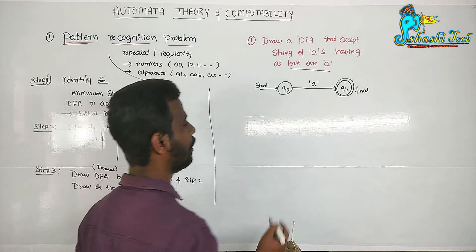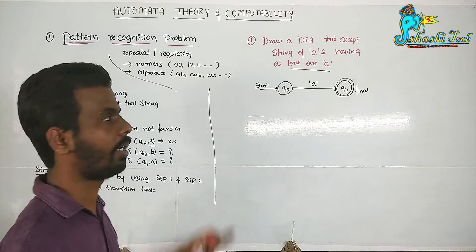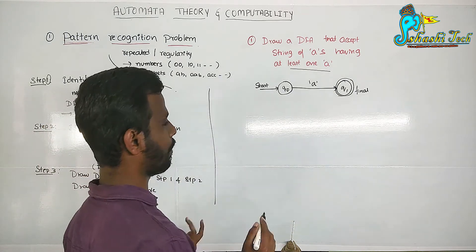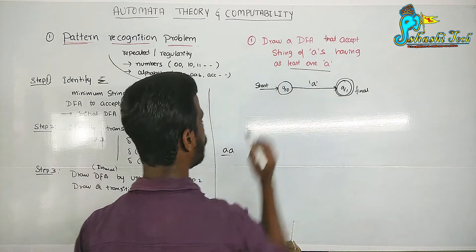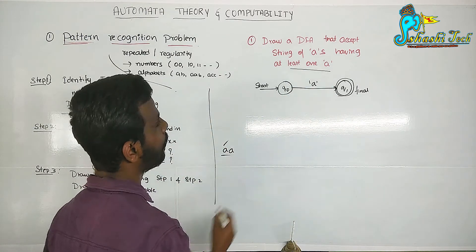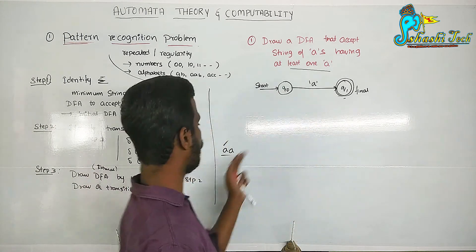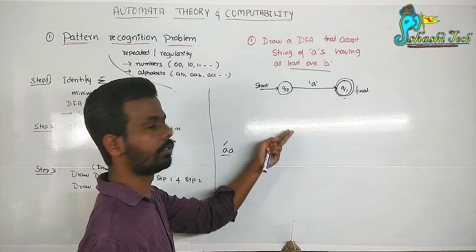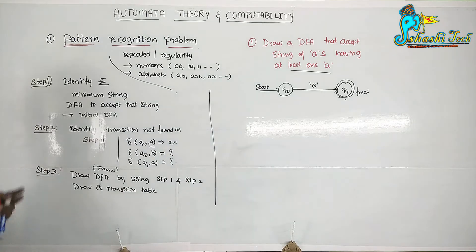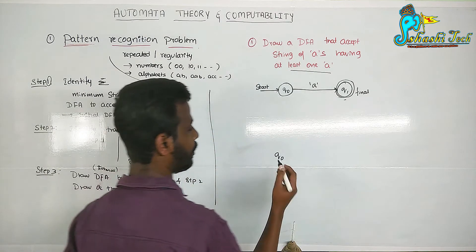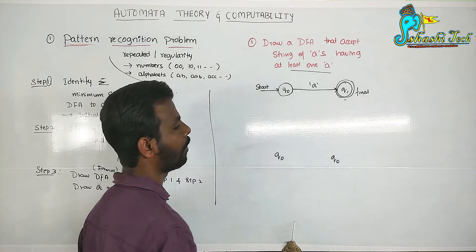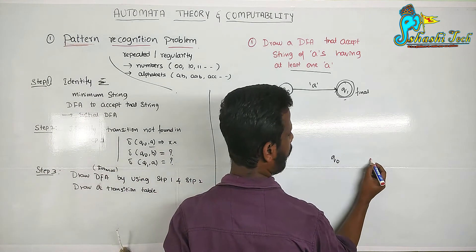I will give you the inputs. Upon input A, Q0 goes to Q1. A is completed. Now control is at Q1. If I give another A from Q1, where should it go? There is no transition defined, so this DFA is incomplete. We need to identify that missing transition and rewrite the DFA. We consider states Q0, Q1, and one more state represented by a question mark.